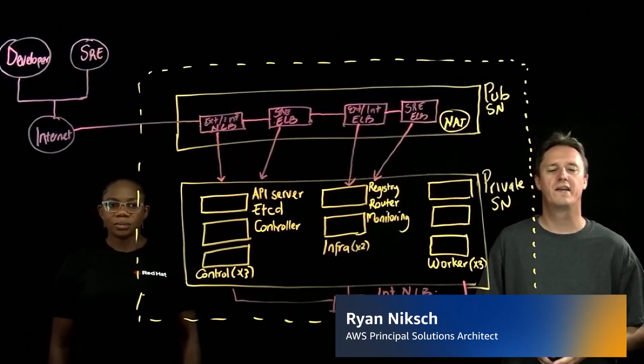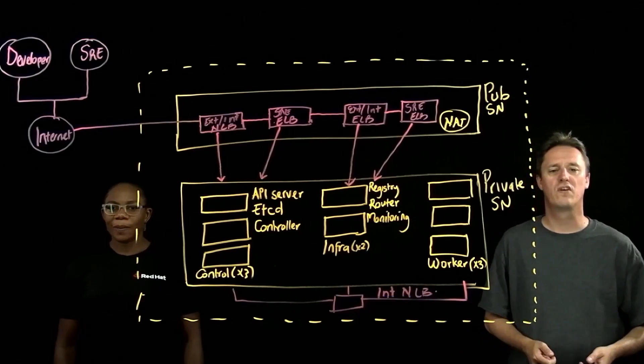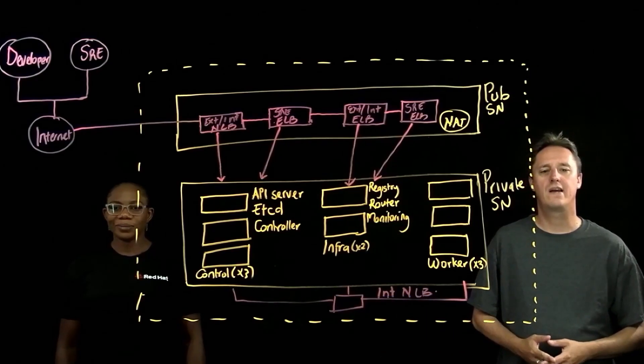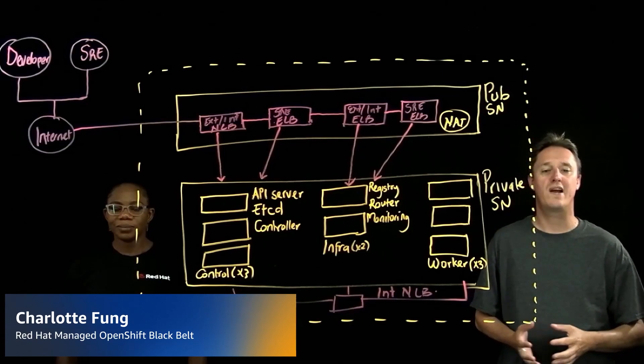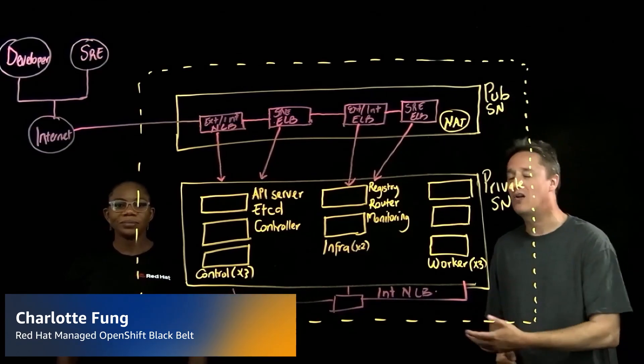Greetings, welcome. My name is Ryan Nix. I am a Principal Solutions Architect with Amazon Web Services. Joining me here today is Charlotte, who is one of the Red Hat Managed OpenShift Black Belt team members. Charlotte, say hello.